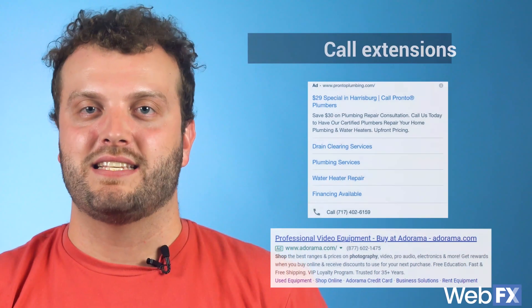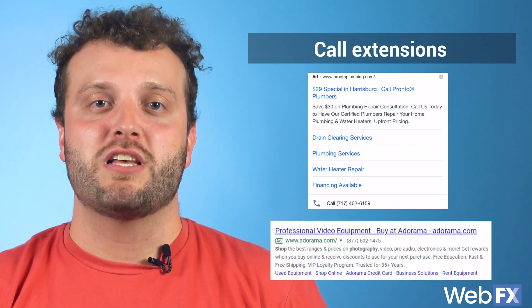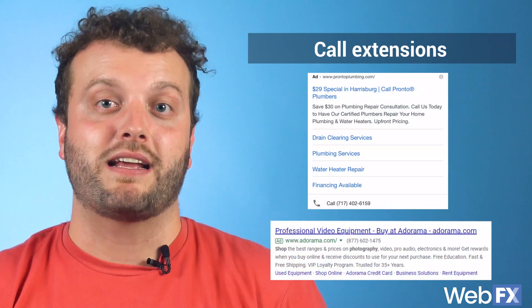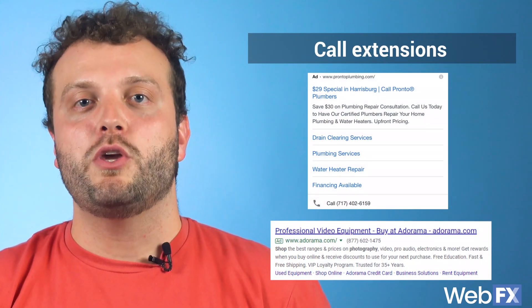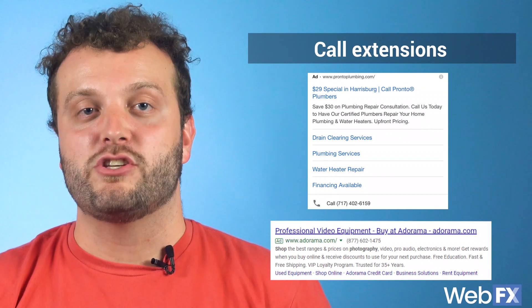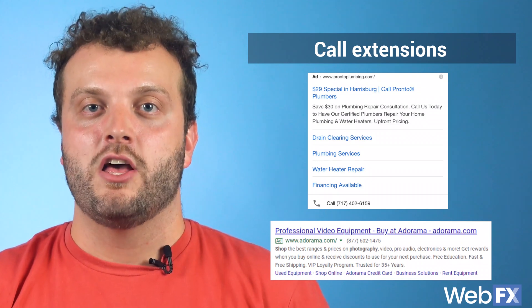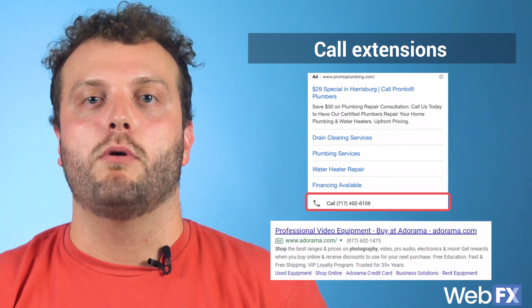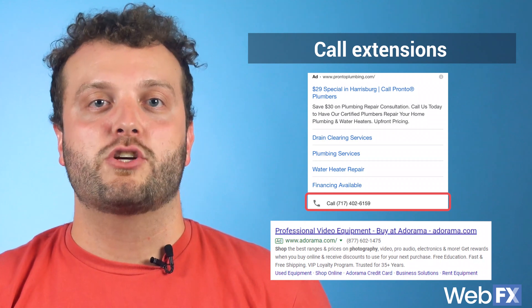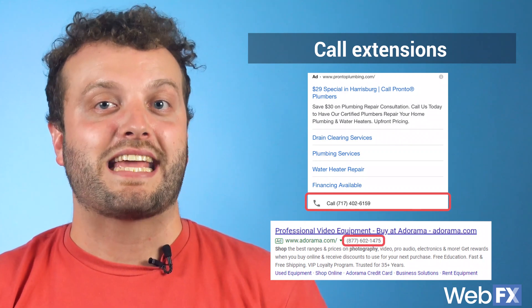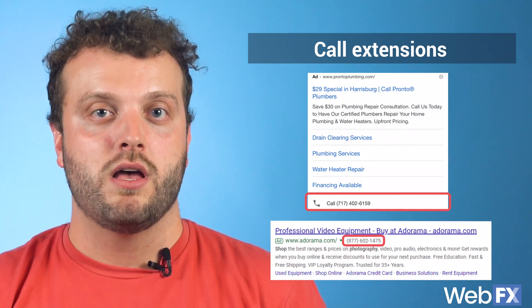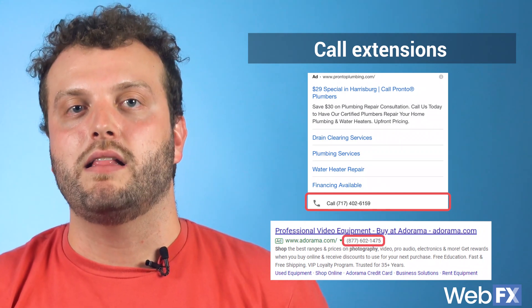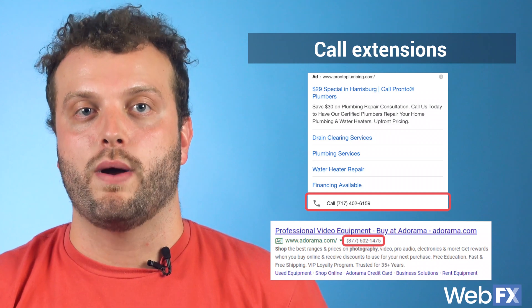Call extensions are exactly what they sound like — they make it easier for someone to call you by clicking your ad. When you use a call extension in your ad, you'll see a button that lets users click to call if they're on a mobile device. If they're looking at your ad from a device that can't make calls, they'll still see your phone number and can click through to your website.